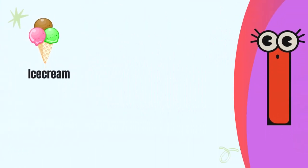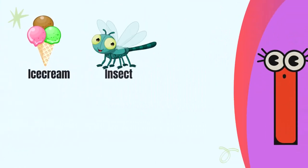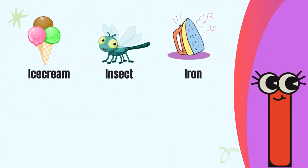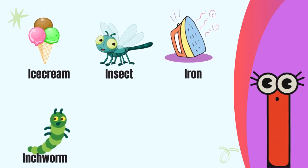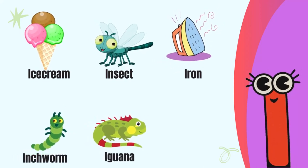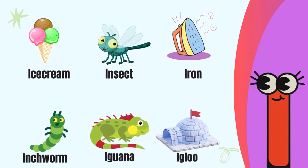Letter I. I for ice cream, I for insect, I for iron, I for inchworm, I for iguana, I for igloo.